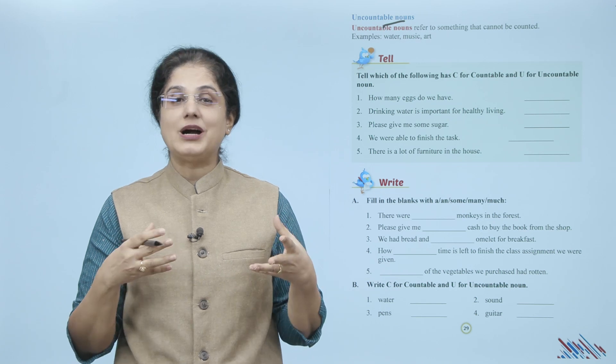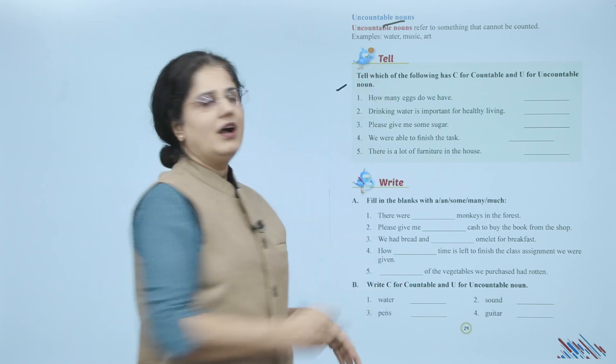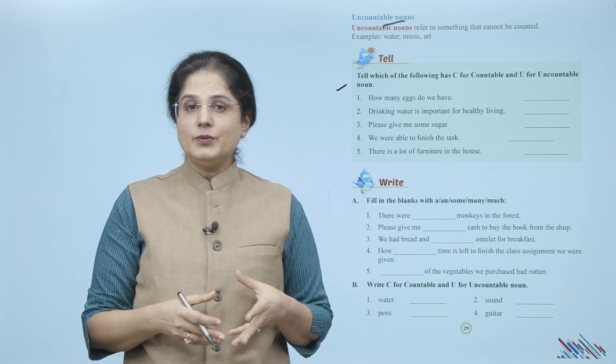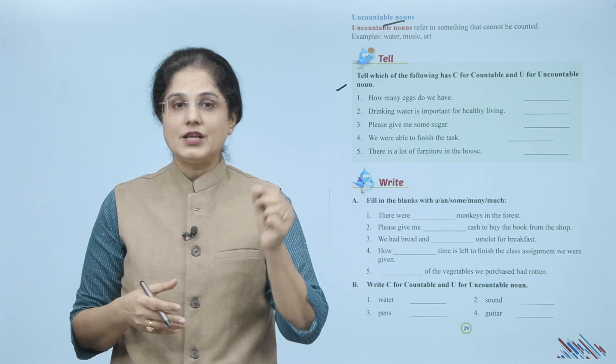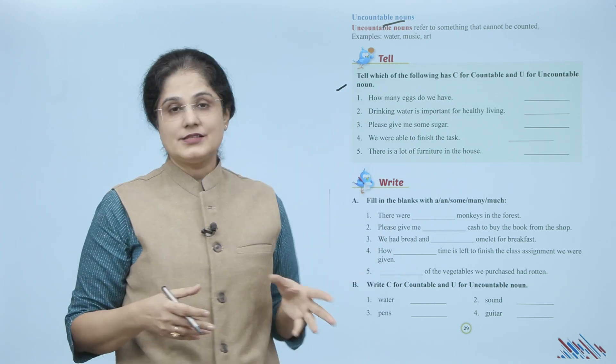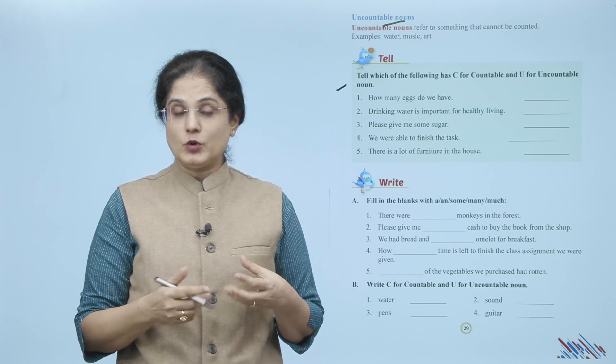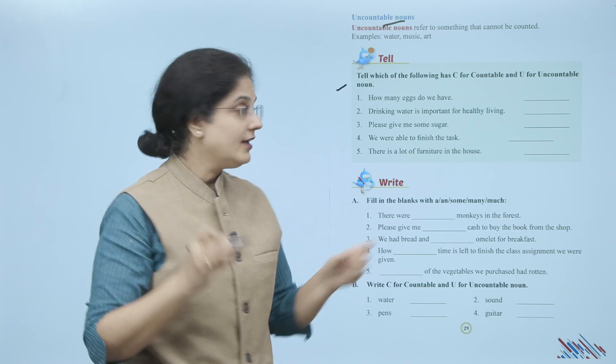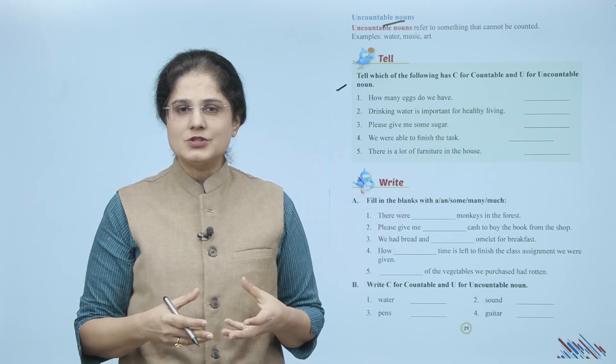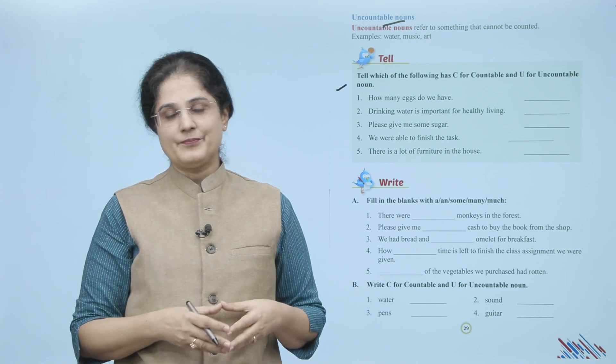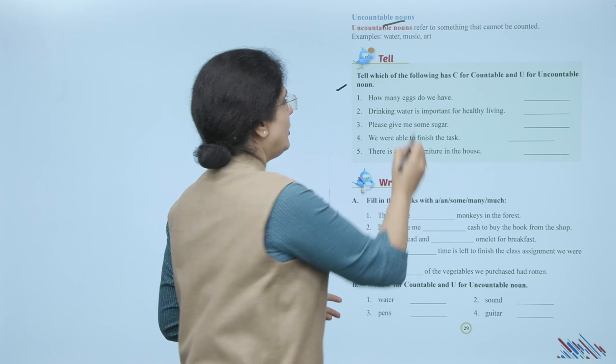Now tell which of the following: C for countable and U for uncountable nouns. Toh in sentences mein agar aap jo nouns diye gaye hain unko agar aap count kar sakte hain toh yahan pe aap C likhenge. Agar aap unko count nahi kar sakte, un nouns ko, toh aap U likhenge. For example: 'How many eggs do we have?' Ab jo eggs hain, inko aap count kar sakte hain, toh yahan pe likhenge C.